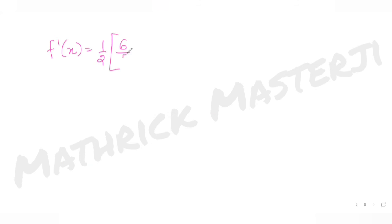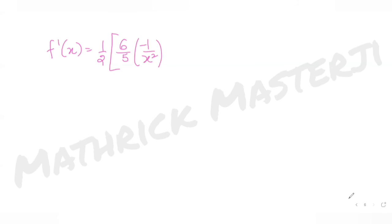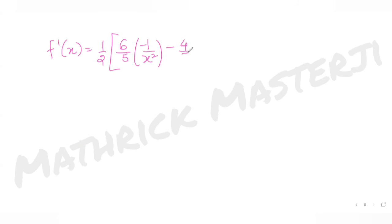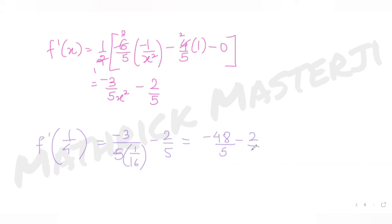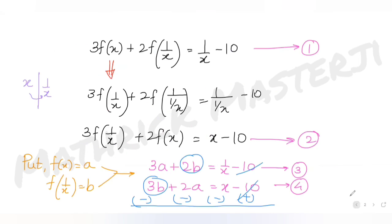Finding f'(x): differentiating f(x), the derivative gives f'(x) = (1/2)[-6/(5x²) - 4/5]. To find f'(1/4), substitute x = 1/4: f'(1/4) = (1/2)[-6/(5 · 1/16) - 4/5] = (1/2)[-48/5 - 2/5... wait, this gives -3/5 · 16 - 2/5] = -48/5 - 2/5 divided appropriately, giving f'(1/4) = -10.